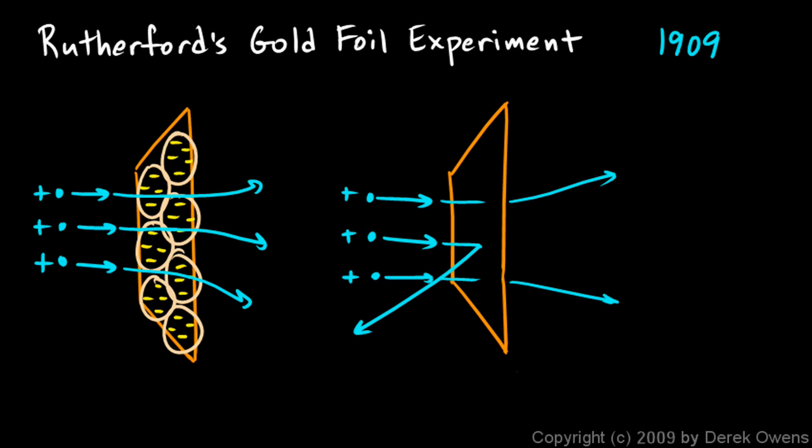And so this experiment, the Gold Foil experiment in 1909, it's a famous experiment because it was this experiment which helped scientists understand what an atom is like on the inside, and specifically that it has a nucleus where most of the mass and all of the positive charge is concentrated.